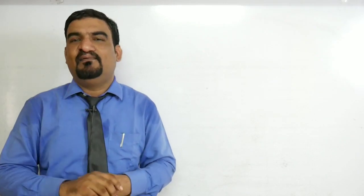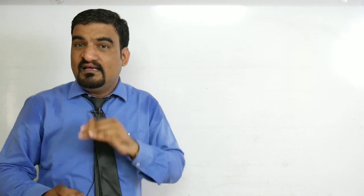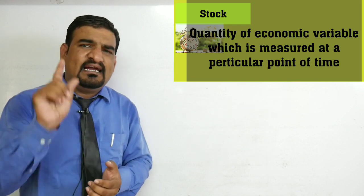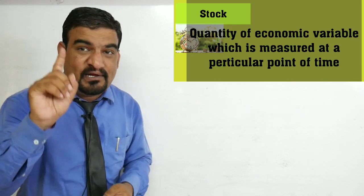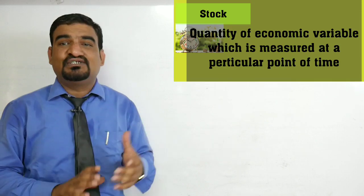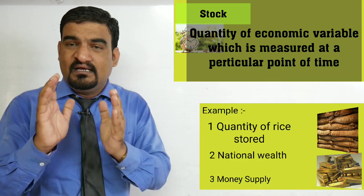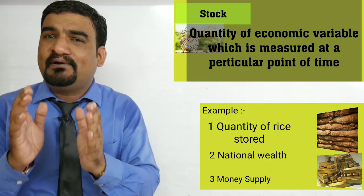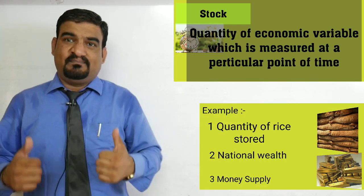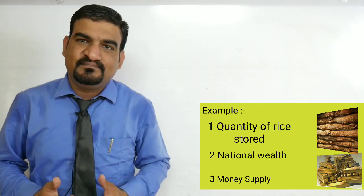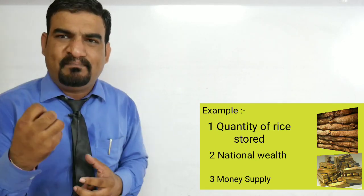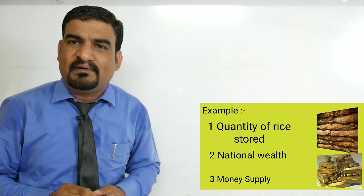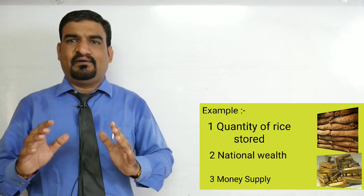All those variables which can be measured at a particular point of time are known as stock variables, just like wealth. Wealth can be measured at a particular point of time — today I have 5 crore rupees. It can be measured at a particular point of time, representing the assets we hold at that point.